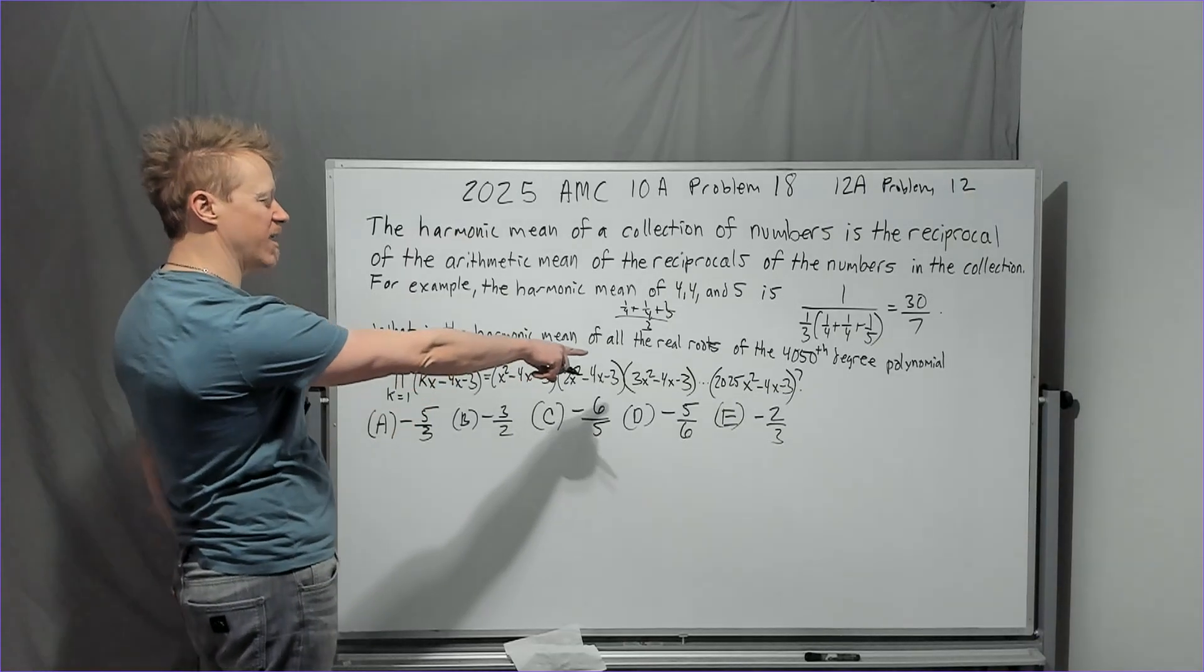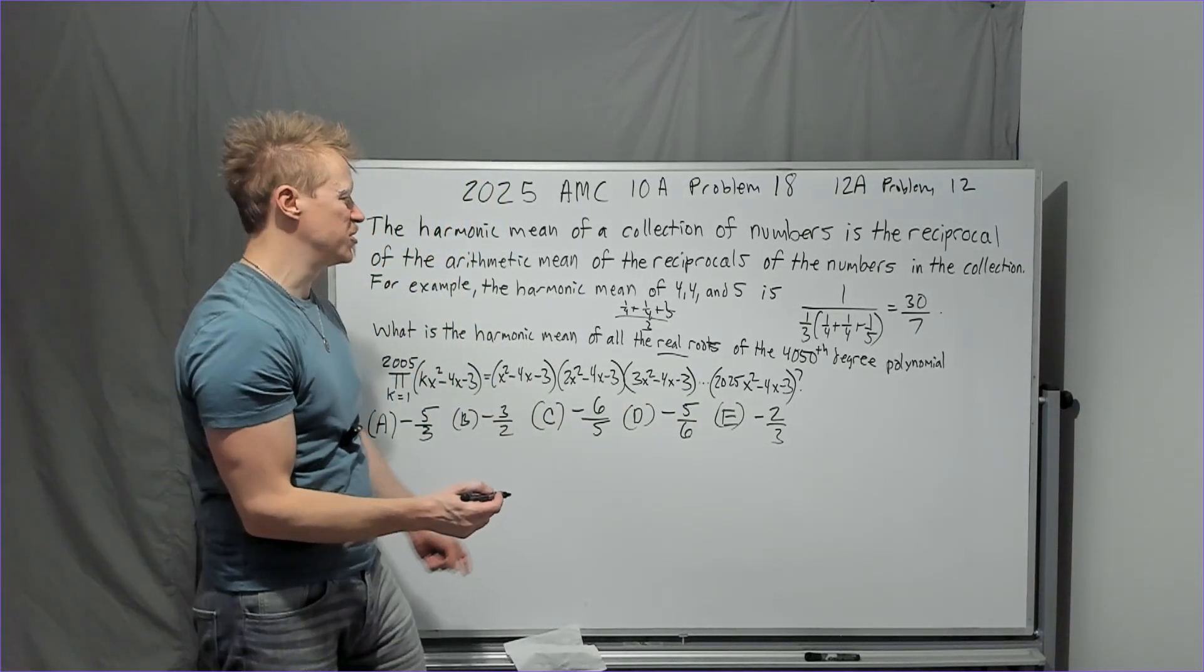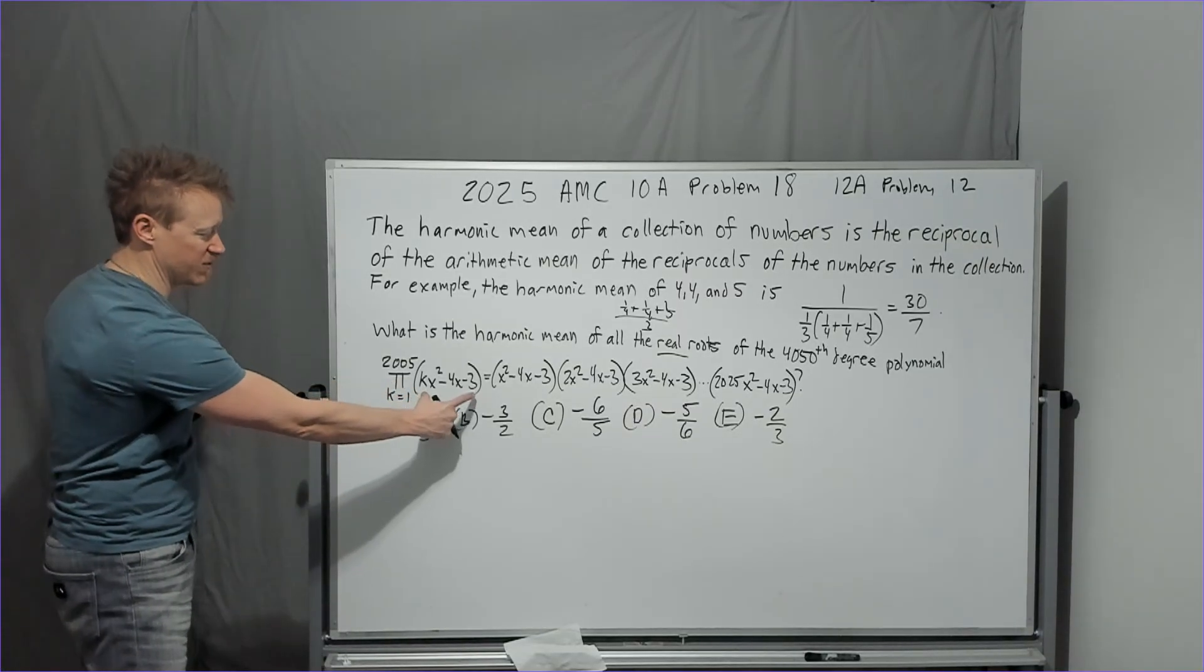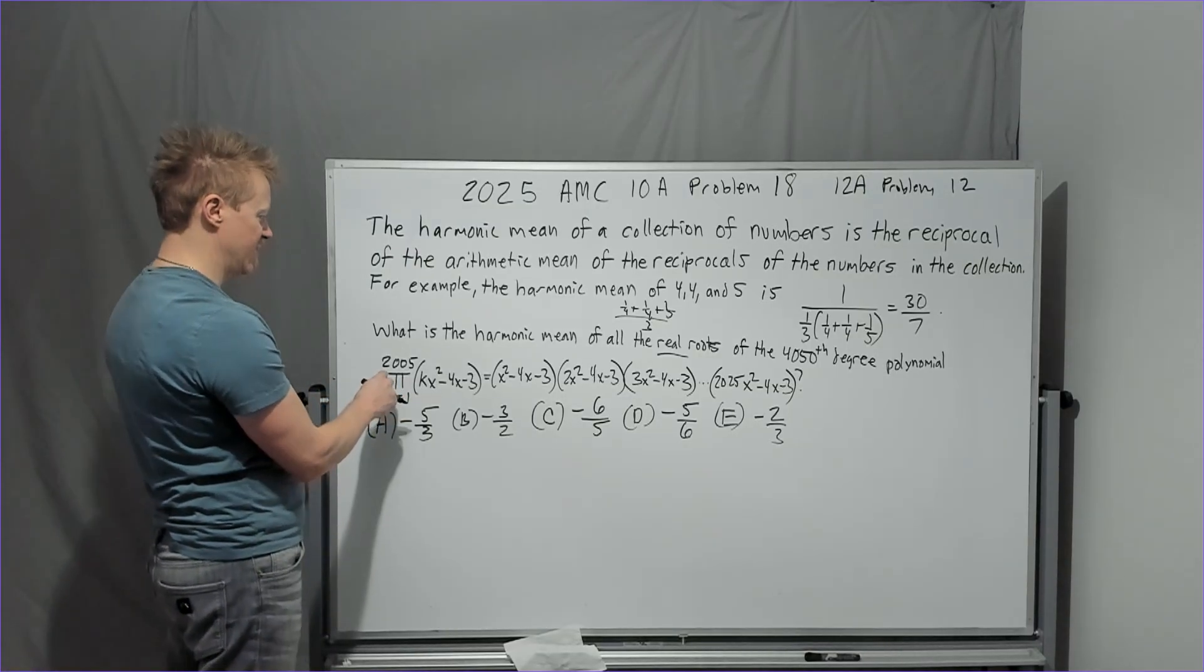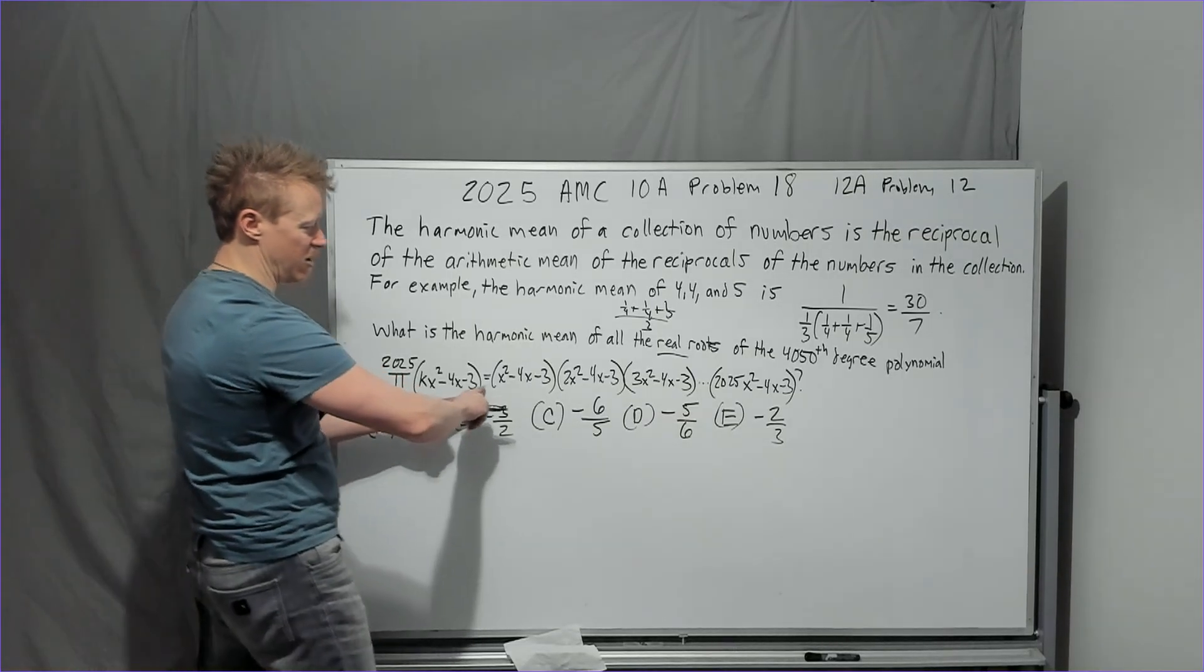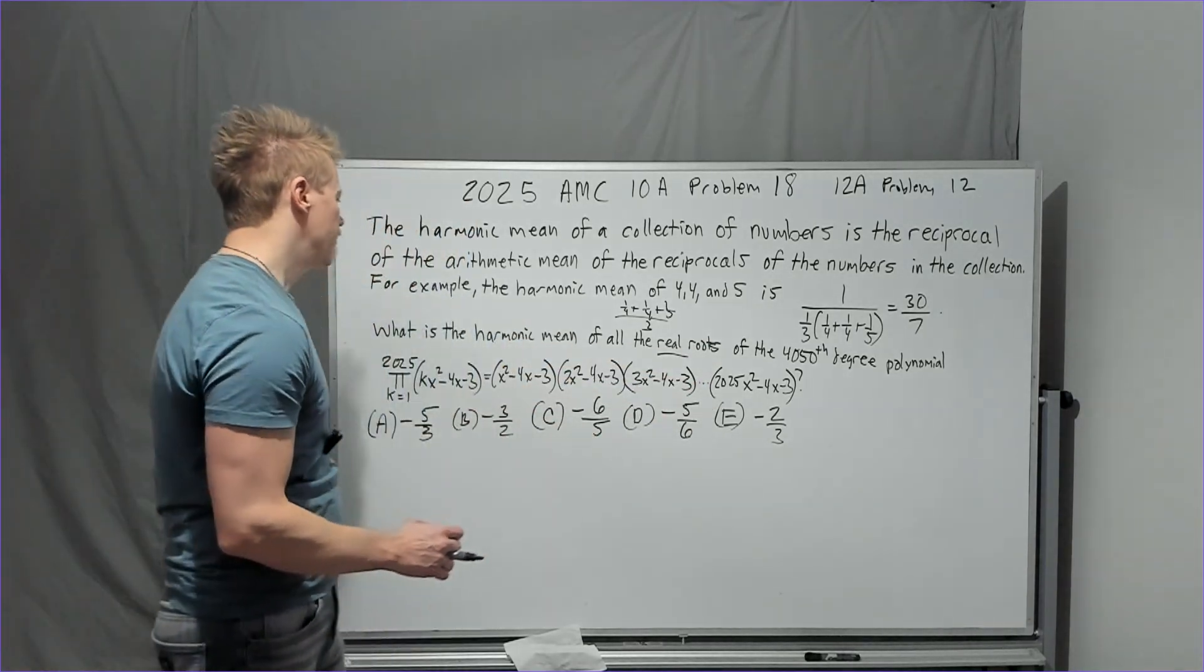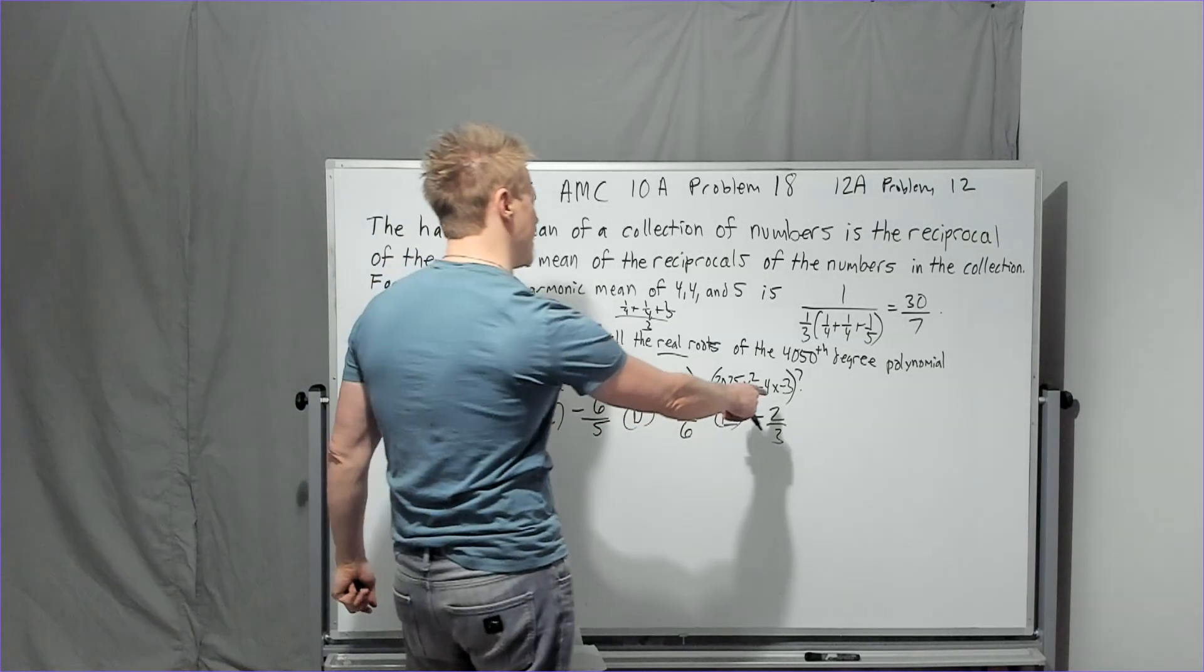What is the harmonic mean of all the real roots, and this may be paused too, I wanted to make sure all the roots would be real, of the 4,050th degree polynomial. This means product, so it's the product of every term that looks like this, from 1 to 2,025. And so you have all of these products, they're all trinomials, and the only thing that's changing is the k values going up by 1.